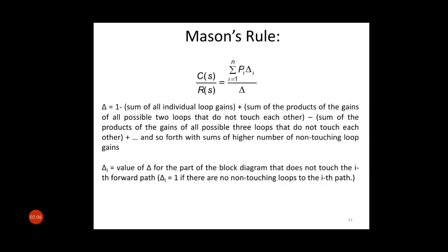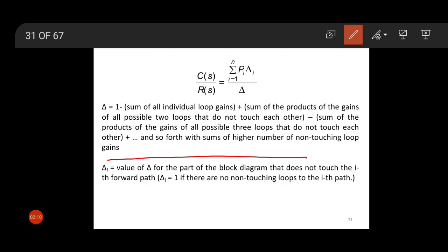Del is expressed as: del equals 1 minus the sum of all individual loop gains, plus the sum of the products of the gains of all possible two loops that do not touch each other, minus the sum of the products of the gains of all possible three loops that do not touch each other, plus so on. And del_i is the value of del for the part of the block diagram that does not touch the ith forward path. If del_i equals 1, that means there are no non-touching loops to the ith forward path.